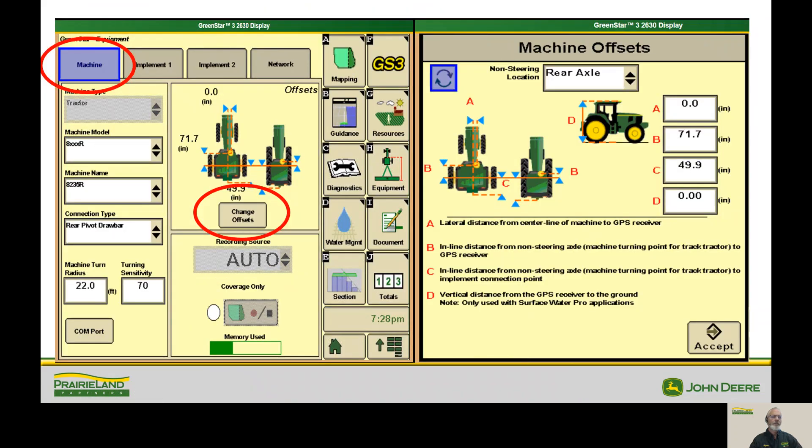This first screen shows the measurement of the machine, which is a tractor. Basically, I want you to understand that this is the machine. Implement one is the planter. It may have an implement two, but that doesn't mean you're pulling another implement. That's going to be blank. So let's go ahead and hit the change offsets button, and you'll get this screen right here.